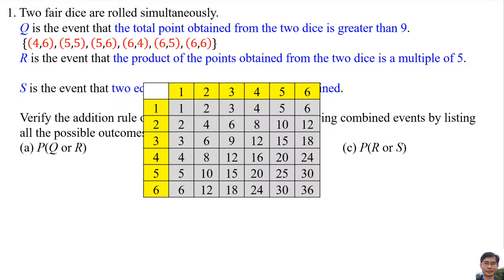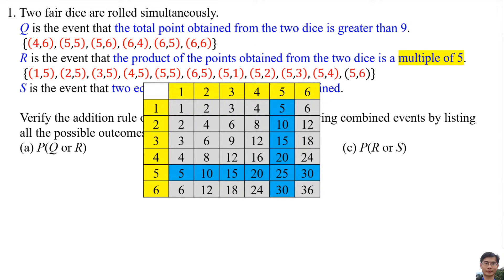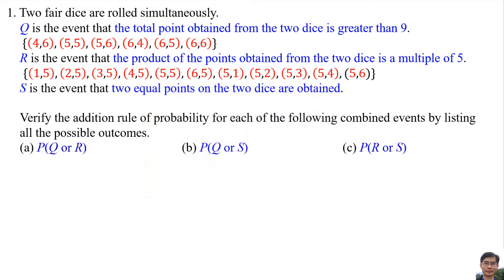For event R (product is a multiple of 5), all possible outcomes are: (1,5), (2,5), (3,5), (4,5), (5,1), (5,2), (5,3), (5,4), (5,5), (5,6), and (6,5). There are 11 elements in event R.